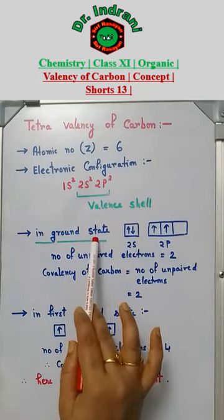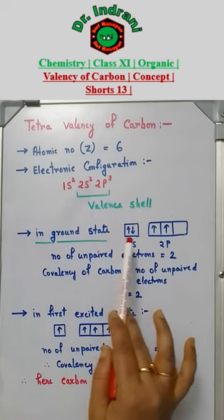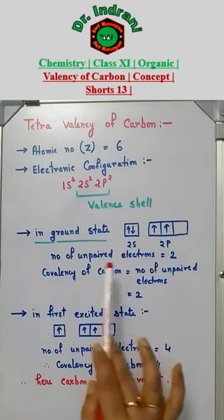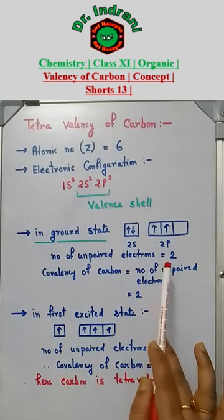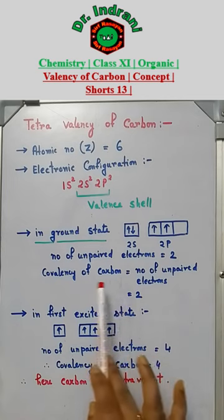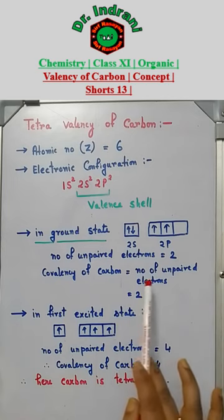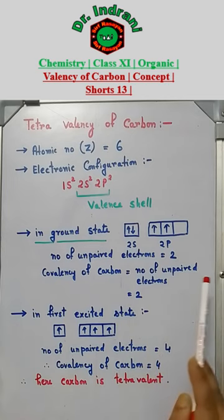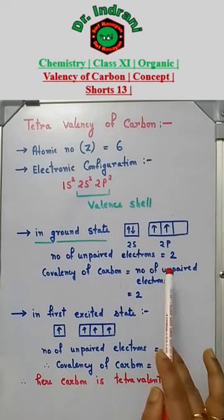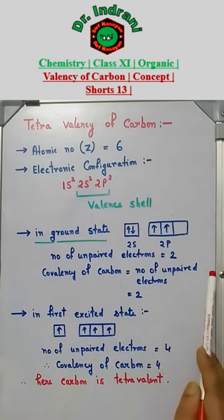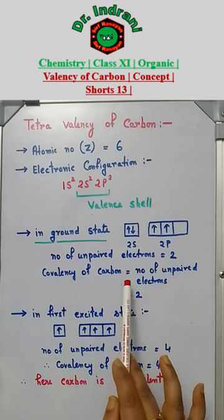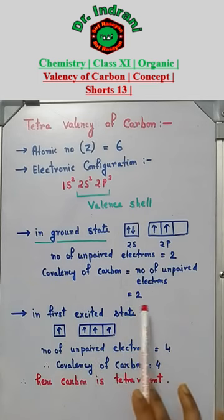In the ground state, the electrons are distributed like this. Here, the number of unpaired electrons is equal to 2. Covalency of carbon is equal to the number of unpaired electrons. Since the number of unpaired electrons is equal to 2, therefore covalency of carbon here is 2.